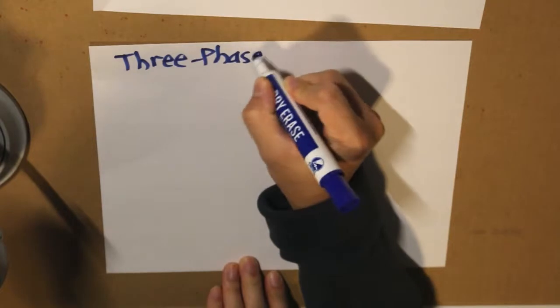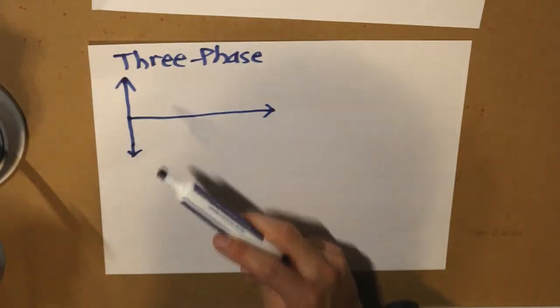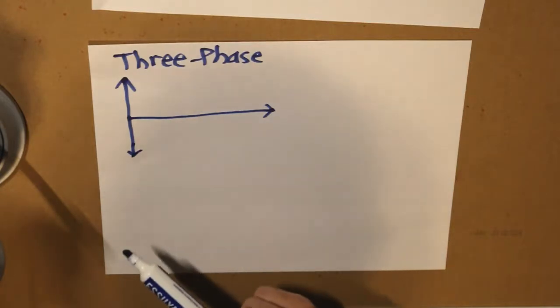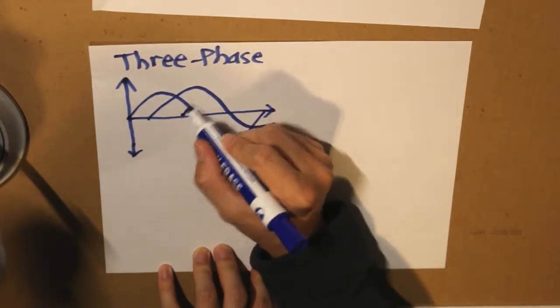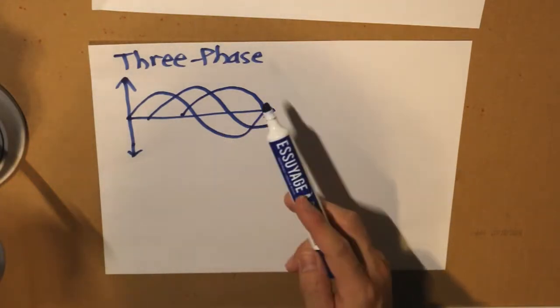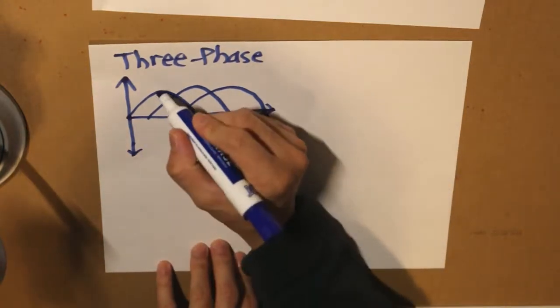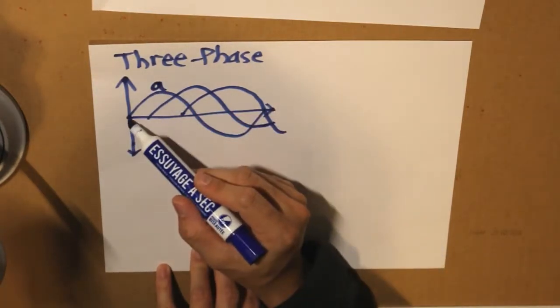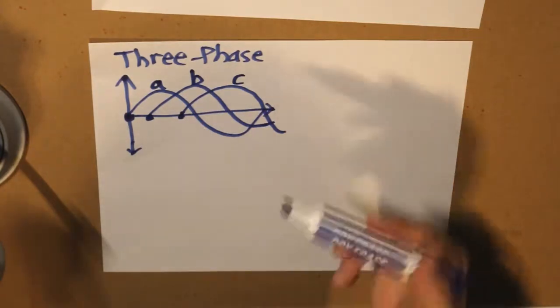Now we have to identify the terminology 'three phase.' What does three phase mean? It basically means that there are three waves occurring at the same time. We have one wave here, another wave here, and another wave — three different waves, three phases. They are coordinated at different positions: wave A starts here, wave B starts here, and wave C starts here. So there are three different phases.